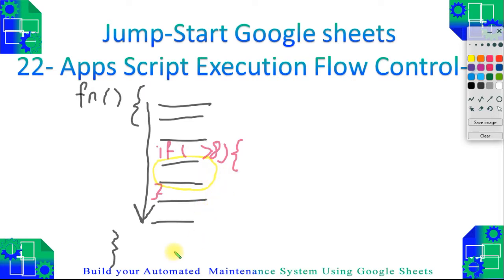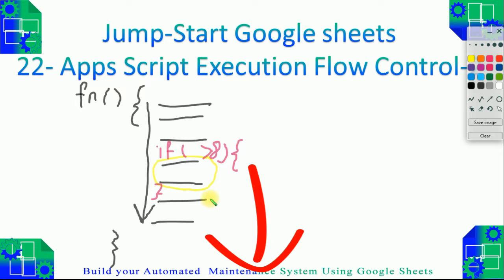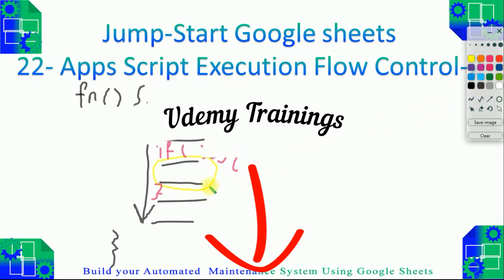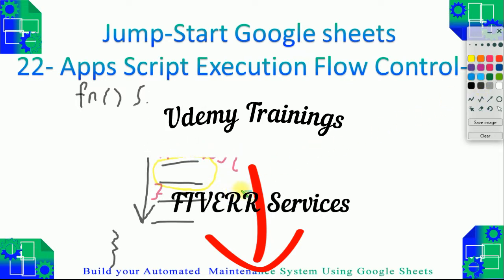Some value I get from my sheet. Then I put curly brackets to include those lines of code. If I have one line of code I don't need to put a curly bracket, but if I have many lines of code I need to put curly brackets. The execution is going to check the condition. If this condition is fulfilled, it's going to execute these two lines. If not, it will skip these two lines between the curly brackets, jump to the remaining lines at the end, and execute them by default.